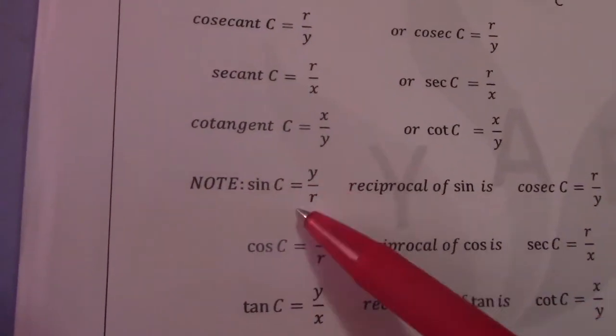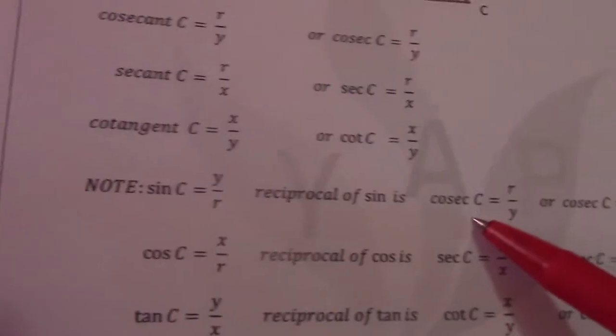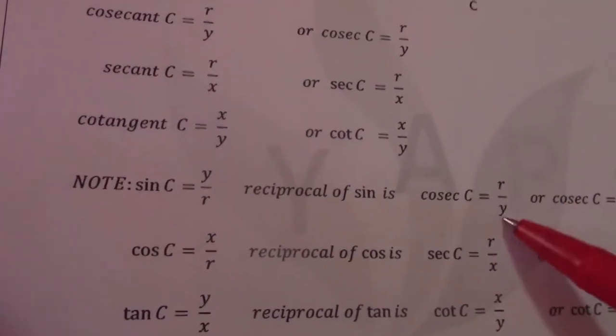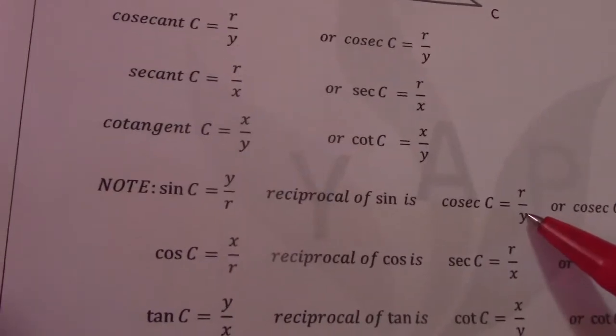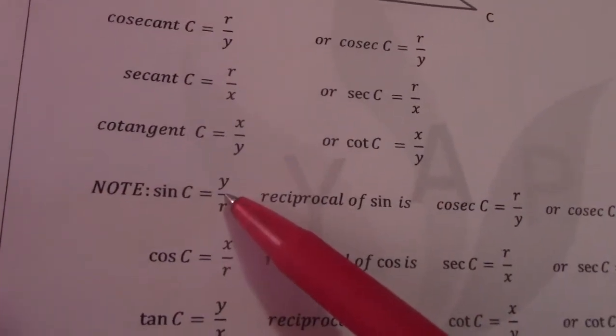So sin c is y over r. Reciprocal of sin is cosec c and as you can see becomes r over y. So when a fraction is flipped around, this is referred to as the reciprocal of that ratio.